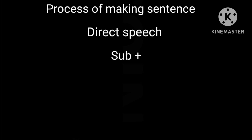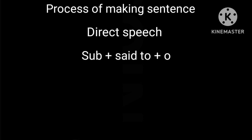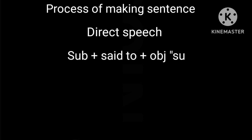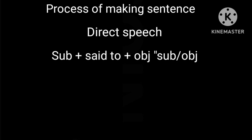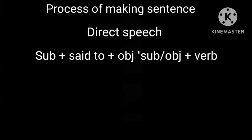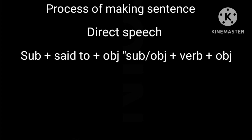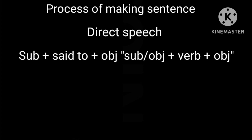Process of making a direct speech sentence: First, subject, then said to, then object. Then inverted comma open, then subject or object, then verb, then object, then inverted comma close.